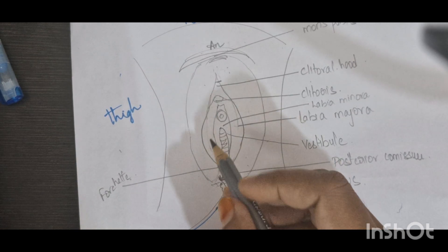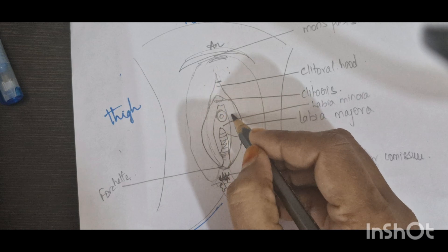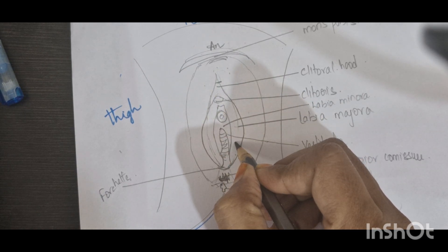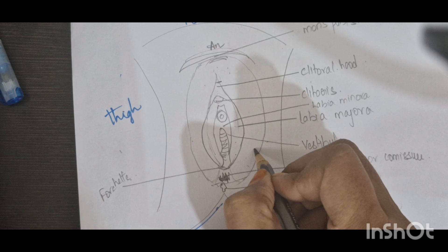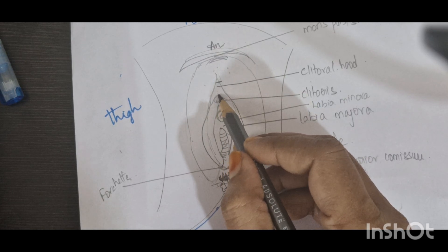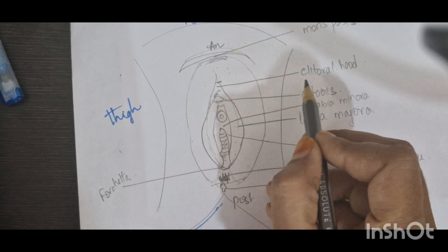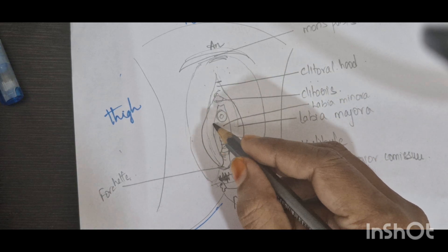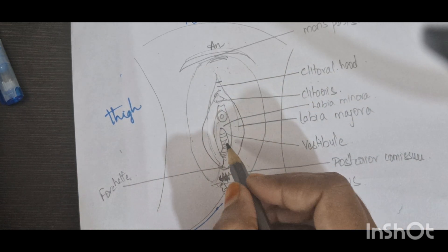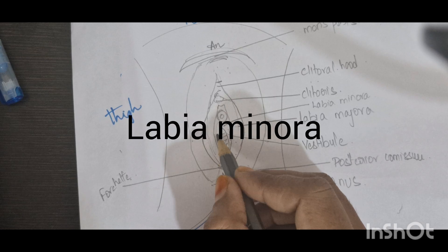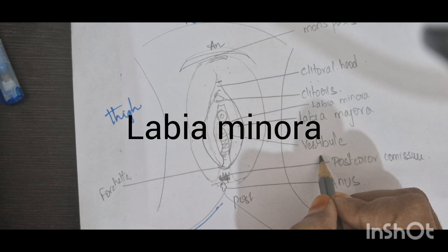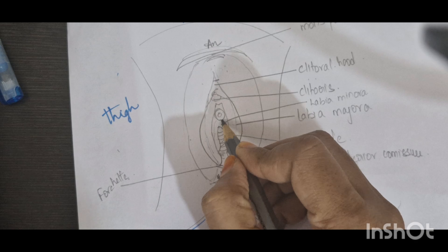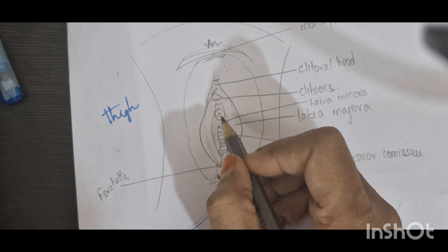The labia minora are two folds of skin between the labia majora. They merge at the anterior region to form a clitoral hood. The space present between the labia majora is called the vestibule.